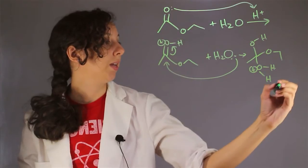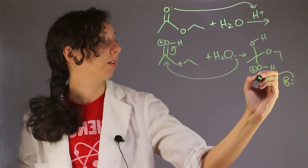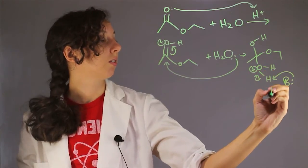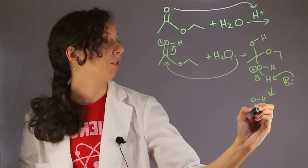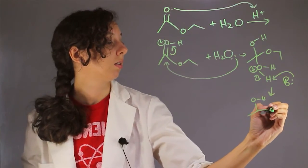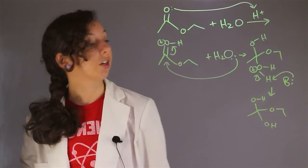Let's just have a generic base come in and take away a hydrogen. So now we've formed our tetrahedral intermediate with our two alcohol groups and our ester.